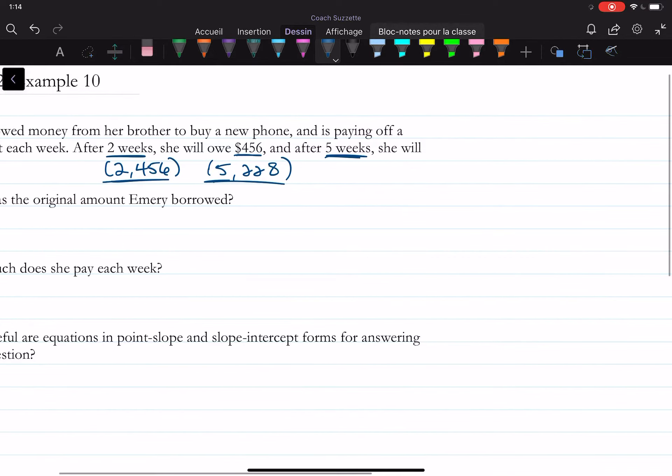One way for us to find the slope, rather than using the slope formula, is to use point-slope form. Let me show you how.